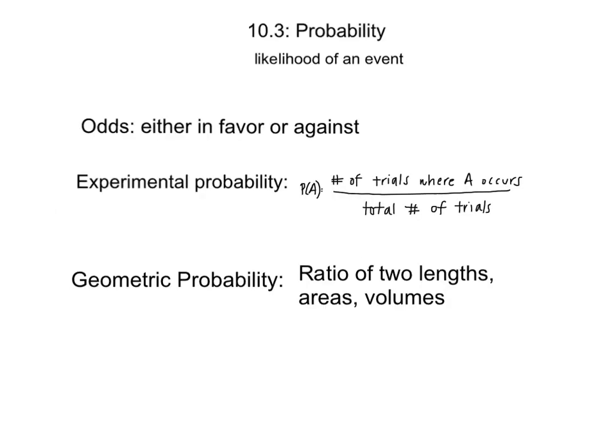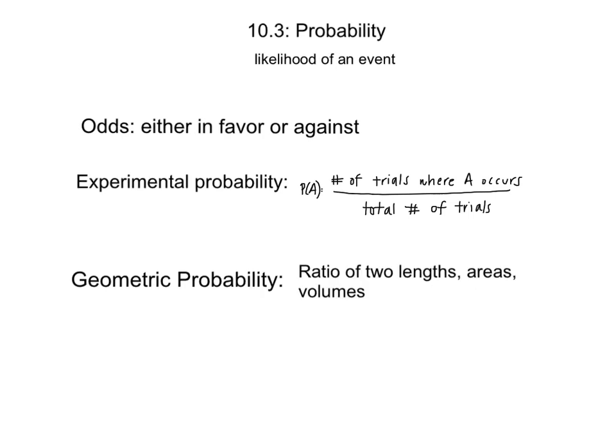Next, in this chapter, is probability, which is the likelihood of an event. The odds can either be in favor or against that event happening. We have two types of probability in this section. We have experimental probability, in which we take the number of trials where A occurs and then put it over the total number of trials.